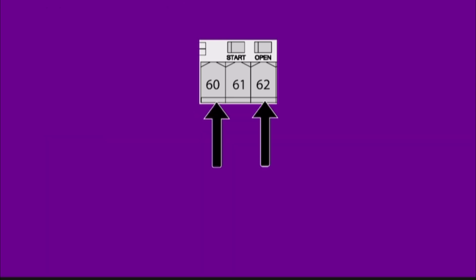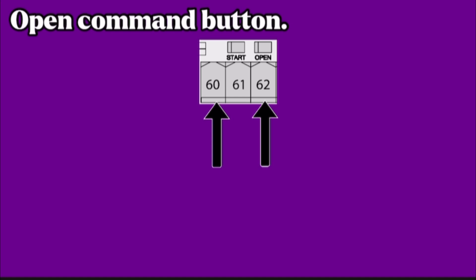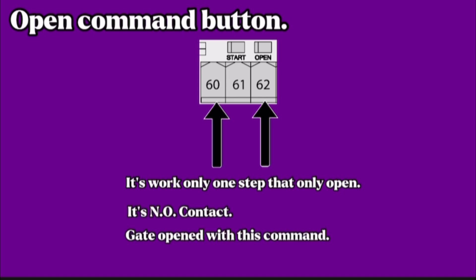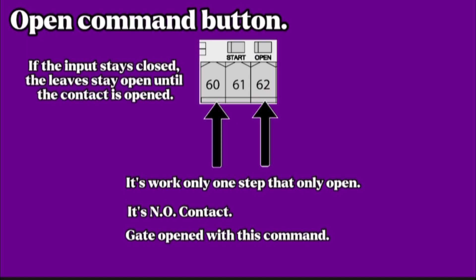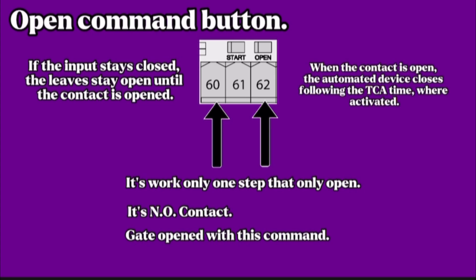Pin 62 with common 60. Open command button. It works only one step, that is only open. If the input stays closed, the leaves stay open until the contact is opened. When the contact is opened, the automated device closes following the TCA time, where activated.